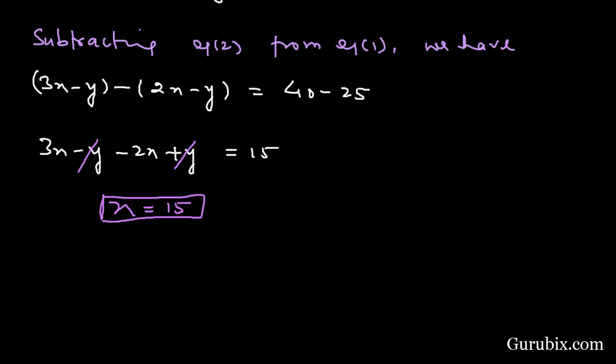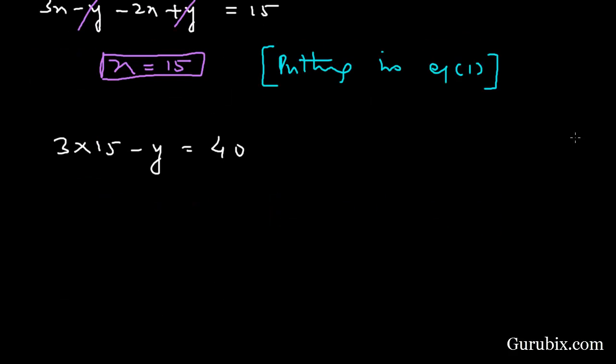Now we shall substitute this value in equation number 1 to get the value of y. Therefore we have 3 times 15 minus y equals 40. This means minus y equals 40 minus 45. Here we have minus y equals minus 5, then we have y equals 5.